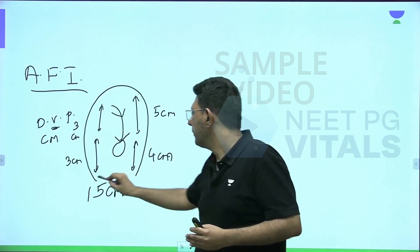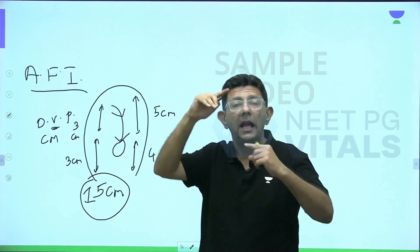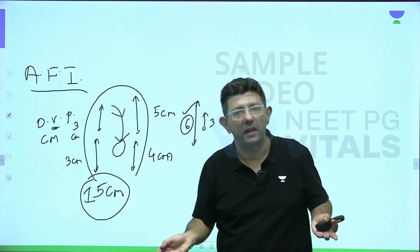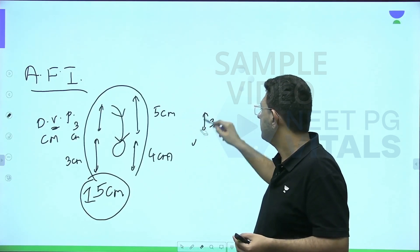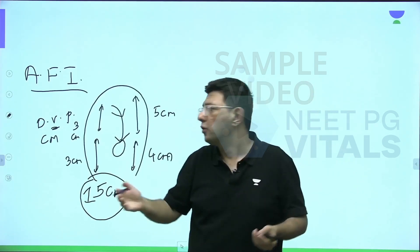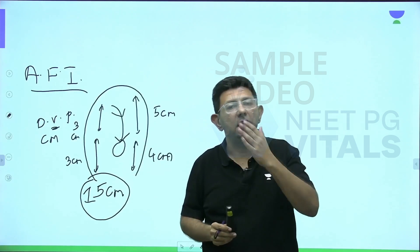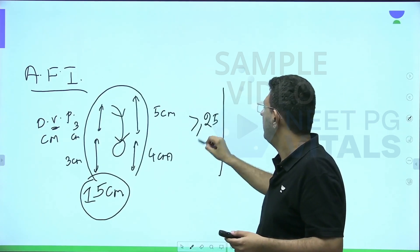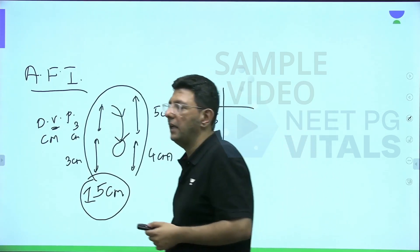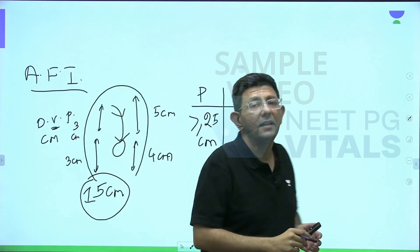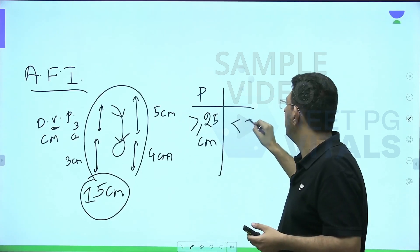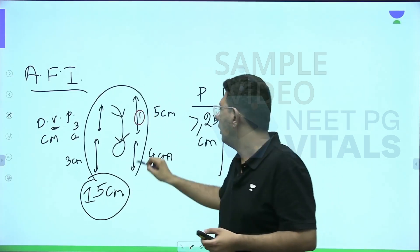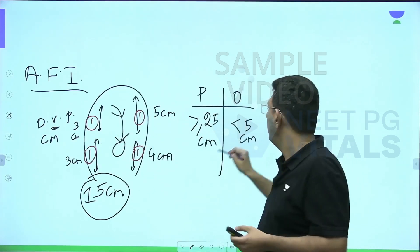Do not choose horizontal — choose the deepest vertical pocket in each quadrant. For example, if one side has a pocket of six and also one of three, choose the six. As per AFI criteria: when AFI is more than or equal to 25 centimeters, we call it polyhydramnios — that means more liquor. When AFI is less than five centimeters, it is called oligohydramnios.